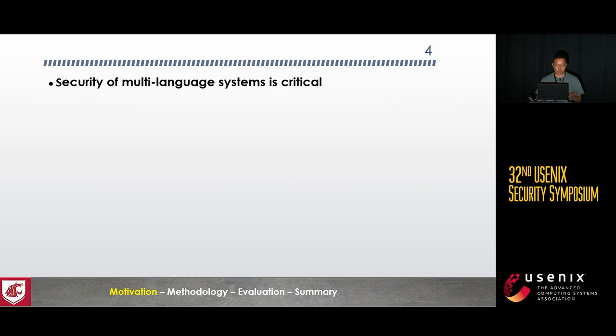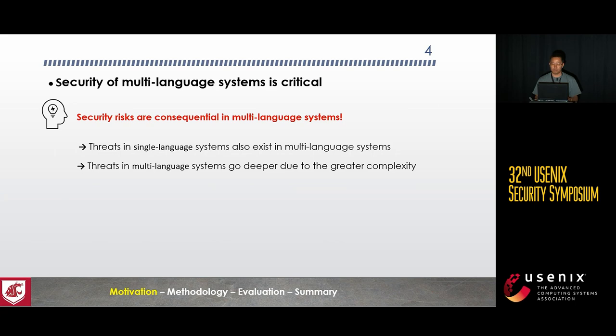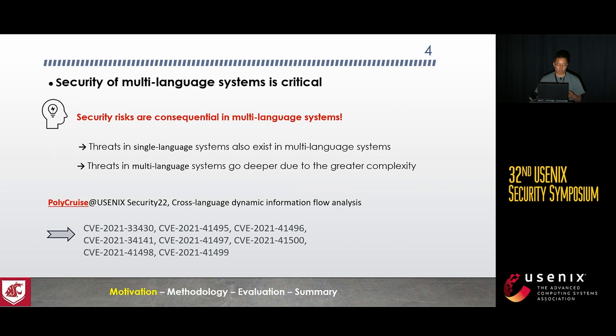Given this prevalence and impact of multi-language systems, the security risks can be highly consequential, and it is important to acknowledge that multi-language systems can induce security stress. On one hand, the stress in single-language systems can also happen in multi-language systems. Moreover, due to the much greater complexity of multi-language systems, the stress can go deeper and be hard to detect. As one of our previous works showed via cross-language dynamic information flow analysis, it has successfully detected novel vulnerabilities in multi-language systems, demonstrating the criticality of such security stress.